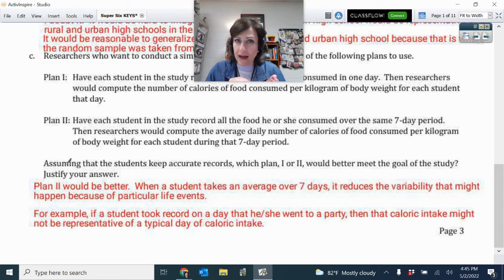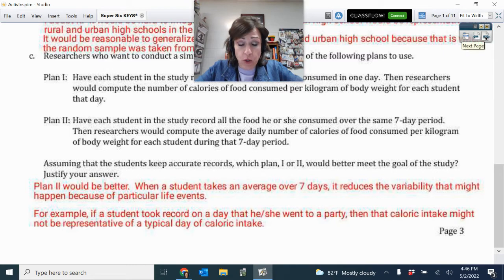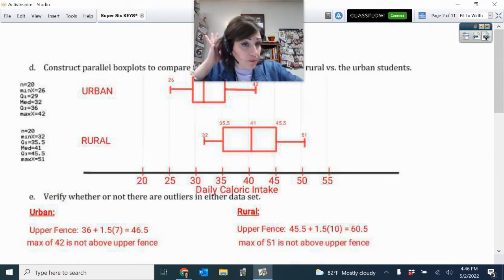They're going to be more closely clustered around the center, the sample results, because you don't have outliers of ones that, hey, maybe this was somebody who went to a birthday party that day or went out for a special occasion or something. And those would be more outlier results. When you have the average over seven days from sample to sample, you have more closely clustered around the center.